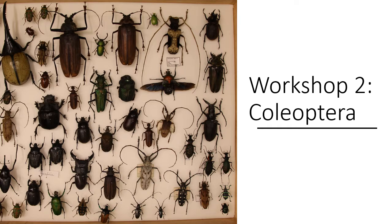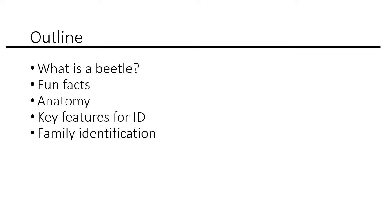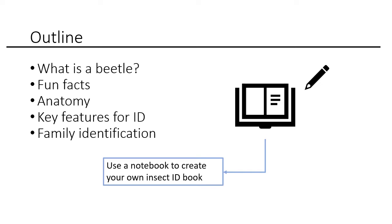Hi, and welcome to the second video in our Identifying Insects series. This video is about how to identify Coleoptera, or beetles. In this workshop, we're first going to discuss what is a beetle and what they aren't, some fun facts about beetles, their general anatomy, and their key features you use for identification, and we're going to go over how to identify some of the major beetle families. You can use a notebook to create your own insect ID book to keep track of the beetles you see around your home and in your neighborhood.